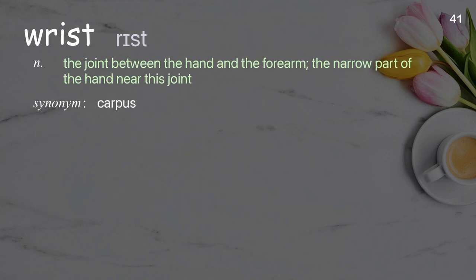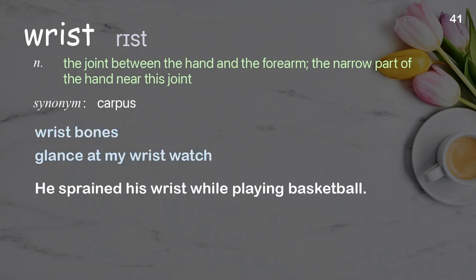Wrist: The joint between the hand and the forearm; the narrow part of the hand near this joint. Examples: wrist bones, glance at my wristwatch. He sprained his wrist while playing basketball.